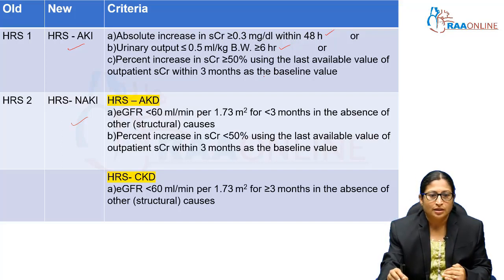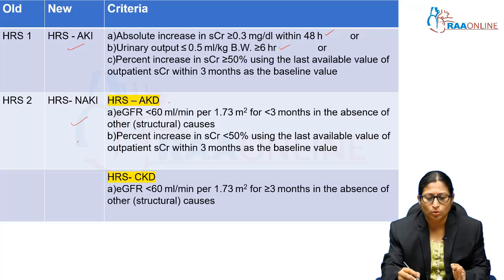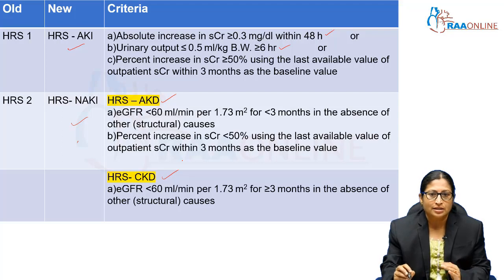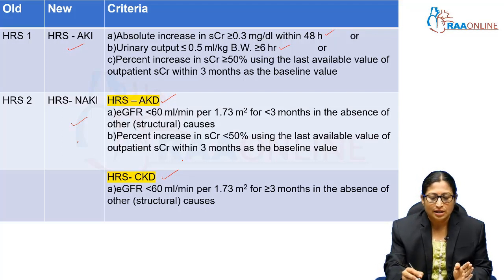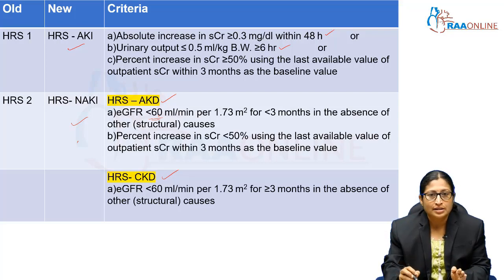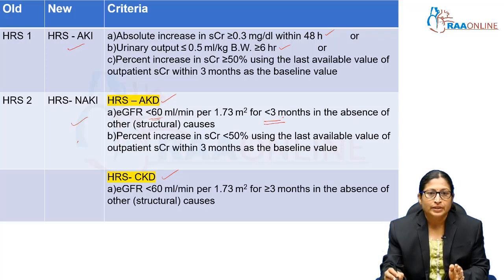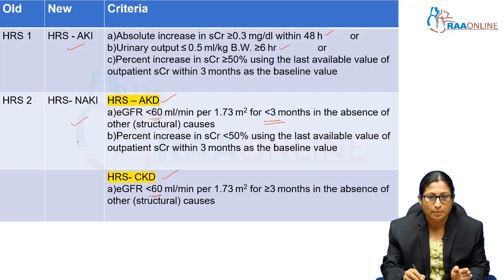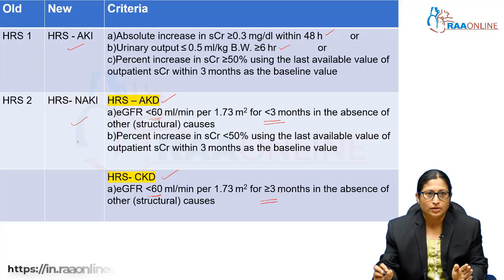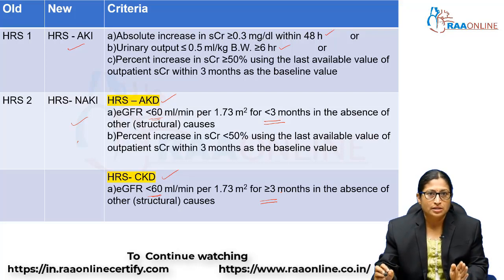If the patient doesn't fit into HRS-AKI criteria, they are classified as having HRS non-acute kidney injury. Under that there are two categorizations: HRS-AKD (acute kidney disease) and HRS-CKD (chronic kidney disease). If the estimated glomerular filtration rate (eGFR) is less than 60 ml/min for less than 6 months, the patient is classified as HRS-AKD. If the fall in GFR to less than 60 ml/min persists for more than 3 months, it is called HRS-CKD. This is the newer classification of hepatorenal syndrome.